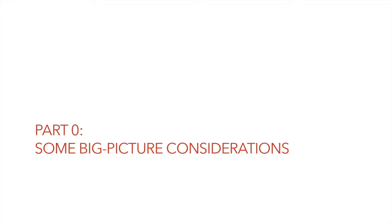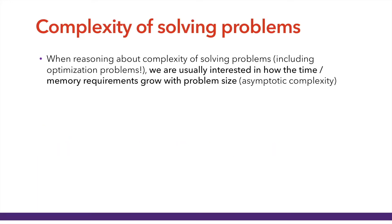Let me begin by talking about some of the big picture considerations we should have before talking about solving optimization problems on quantum computers. In general, when reasoning about the complexity of solving problems — and this of course includes optimization problems — we're usually interested in how the time or memory requirements grow with problem size, or in other words, we're interested in asymptotic complexity.